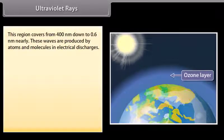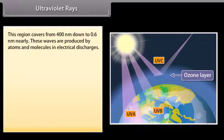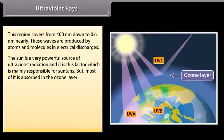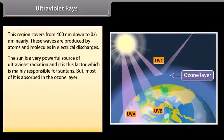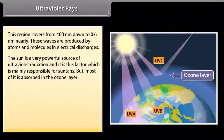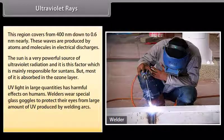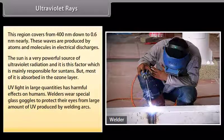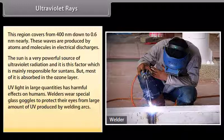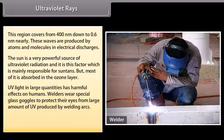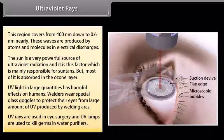Ultraviolet rays. This region covers from 400 nm down to 0.6 nm nearly. These waves are produced by atoms and molecules in electrical discharges. The sun is a very powerful source of ultraviolet radiation and it is this factor which is mainly responsible for suntans, but most of it is absorbed in the ozone layer. UV light in large quantities has harmful effects on humans. Welders wear special glass goggles to protect their eyes from large amount of UV produced by welding arcs. UV rays are used in eye surgery and UV lamps are used to kill germs in water purifiers.